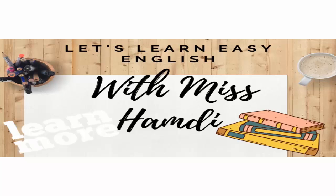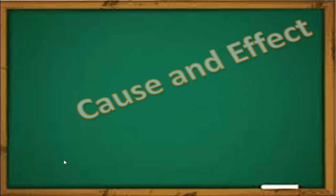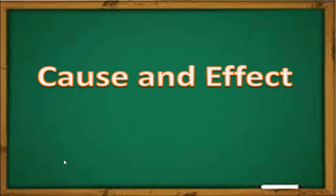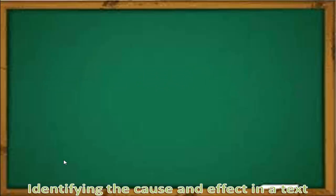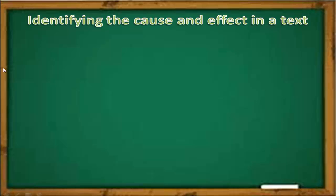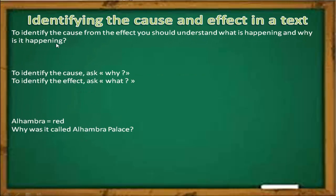Welcome everybody to a new lesson, always with the Four Ms people: cause and effect. How can we differentiate between the cause and the effect? How can we identify the cause and the effect in a text or in a sentence? It's simple. To identify the cause from the effect, you should understand what's happening and why it is happening.